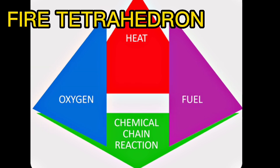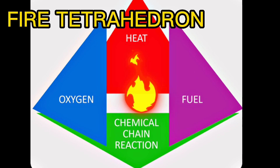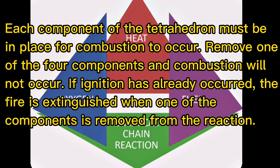Fire tetrahedron components: oxygen, heat, fuel, and chemical chain reaction. Each component of the tetrahedron must be in place for combustion to occur. Remove one of the four components and combustion will not occur. If ignition has already occurred, the fire is extinguished when one of the components is removed from the reaction.